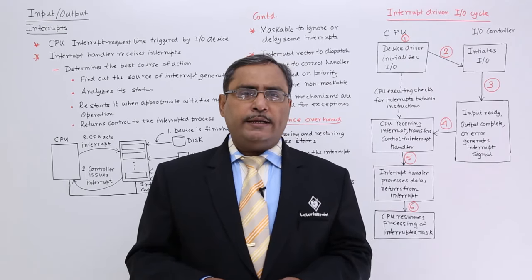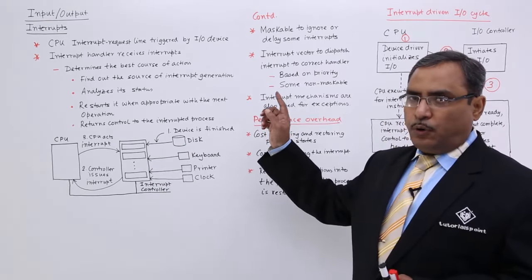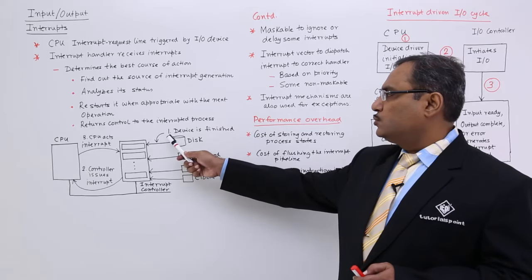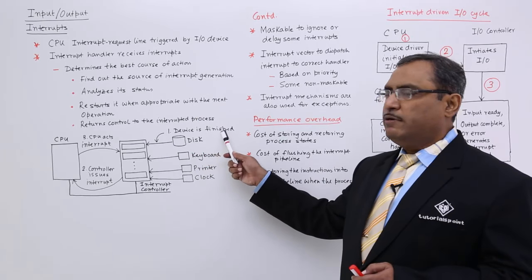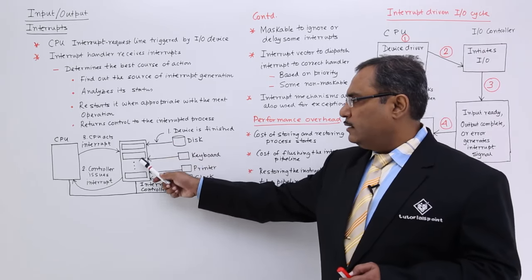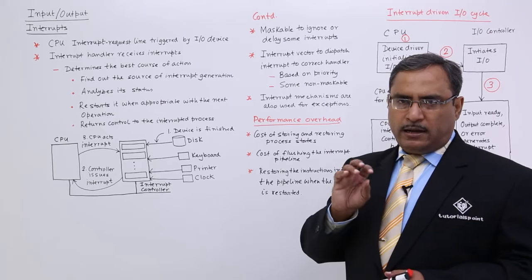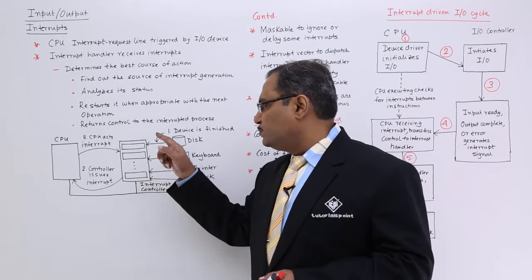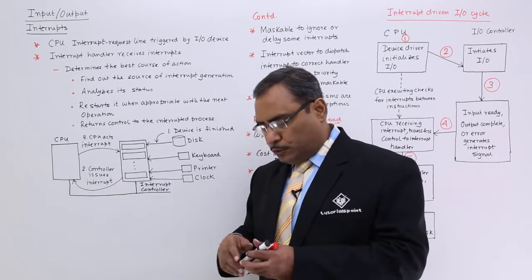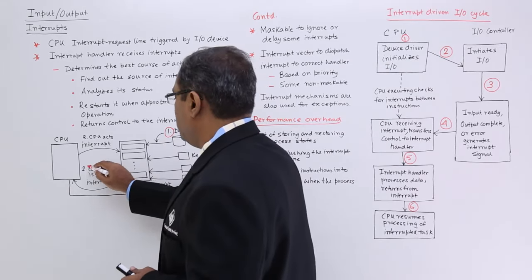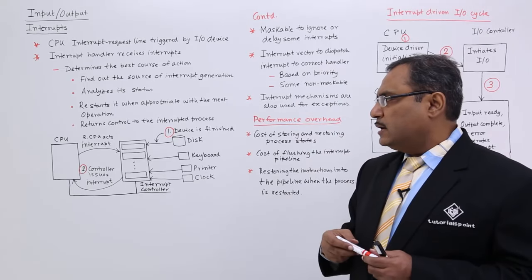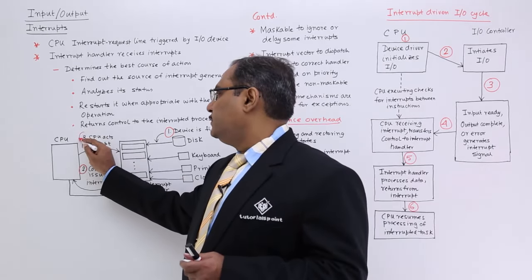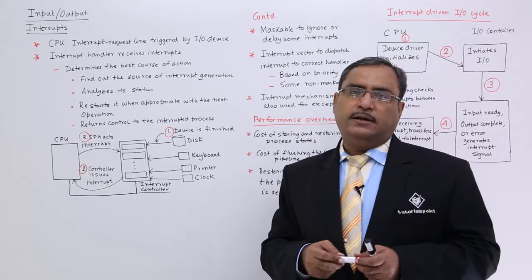To depict this idea, let me discuss these points. Step 1: the CPU interrupt request line is triggered by the IO device — the device has finished its read/write operation and creates an interrupt, giving it to the interrupt controller. Always remember: the interrupt handler is software, while the interrupt controller is hardware. Step 2: the interrupt controller issues an interrupt to the CPU to indicate it is time to get CPU attention, and the CPU will initiate the process against the respective interrupt generated.